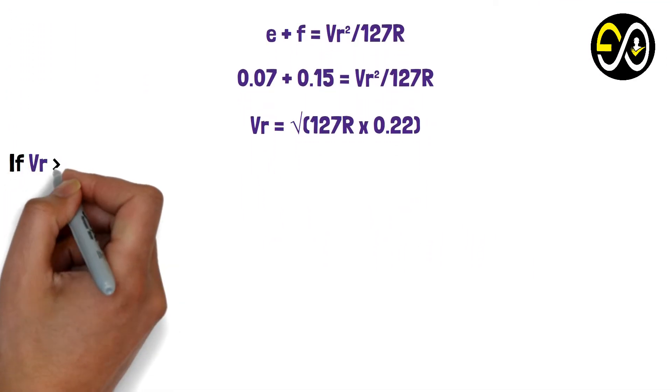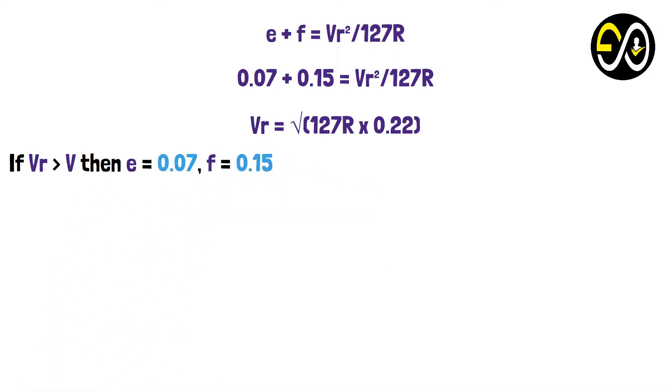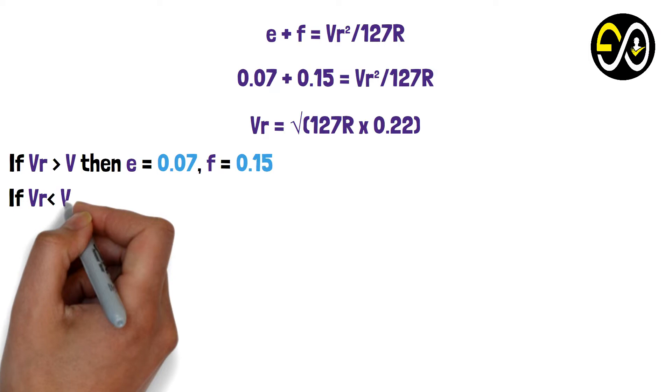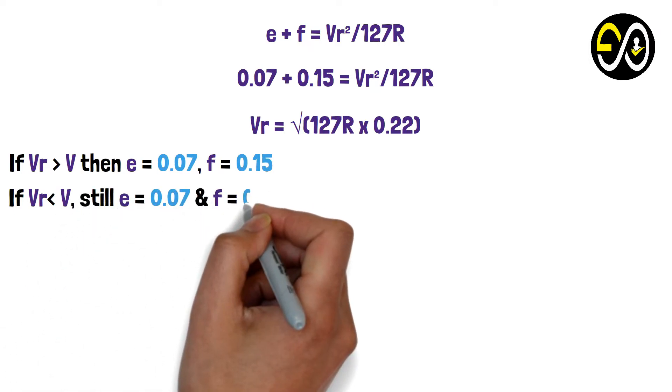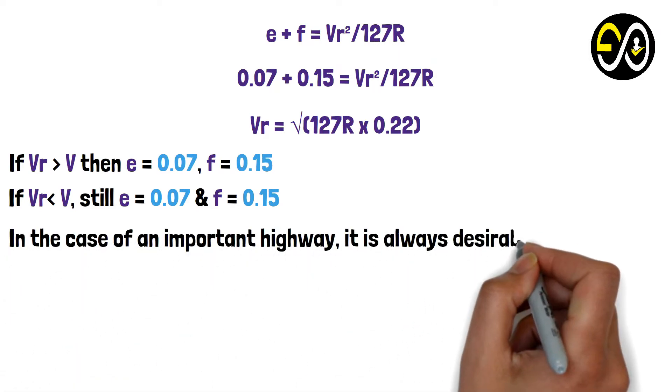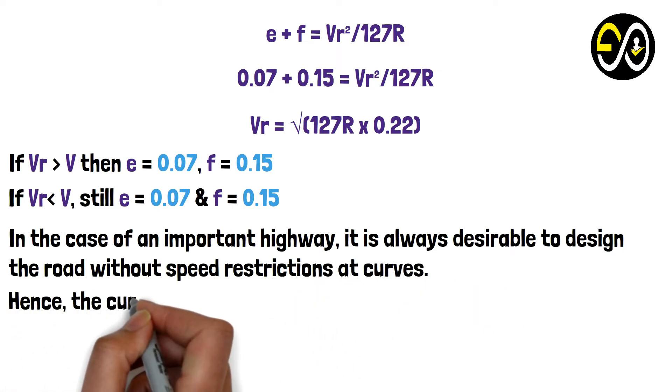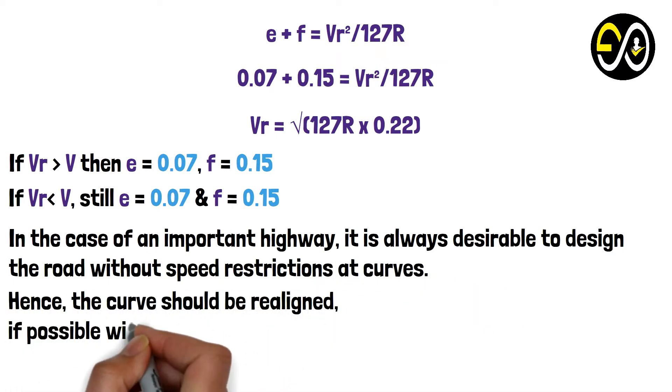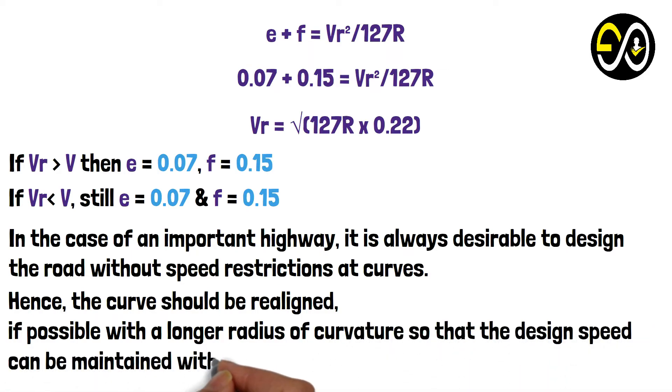If Vr > V then e = 0.07, f = 0.15. If Vr < V, still e = 0.07 and f = 0.15. In the case of an important highway, it is always desirable to design the road without speed restrictions at curves. Hence, the curve should be realigned if possible with a longer radius of curvature so that the design speed can be maintained without any restriction.